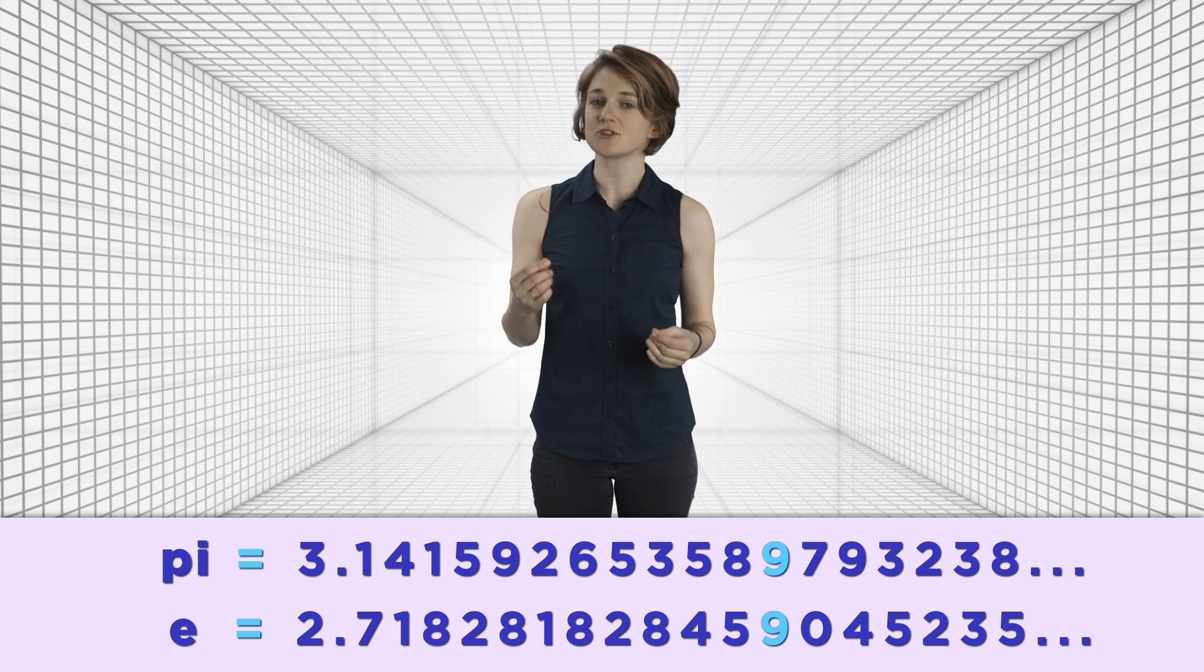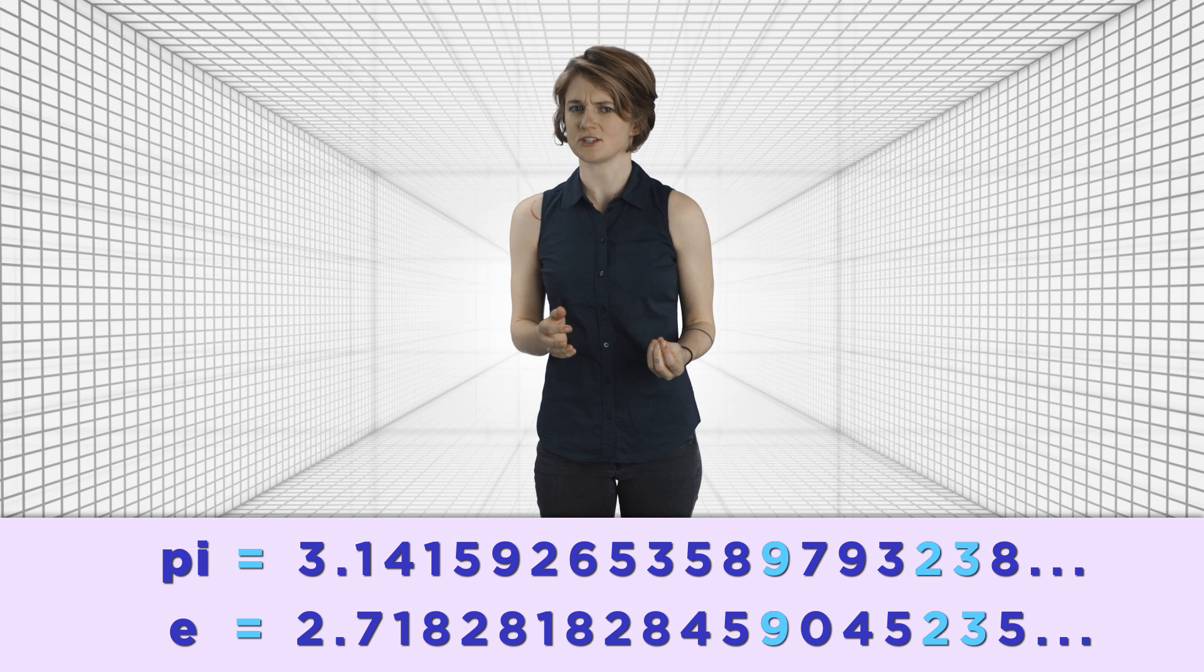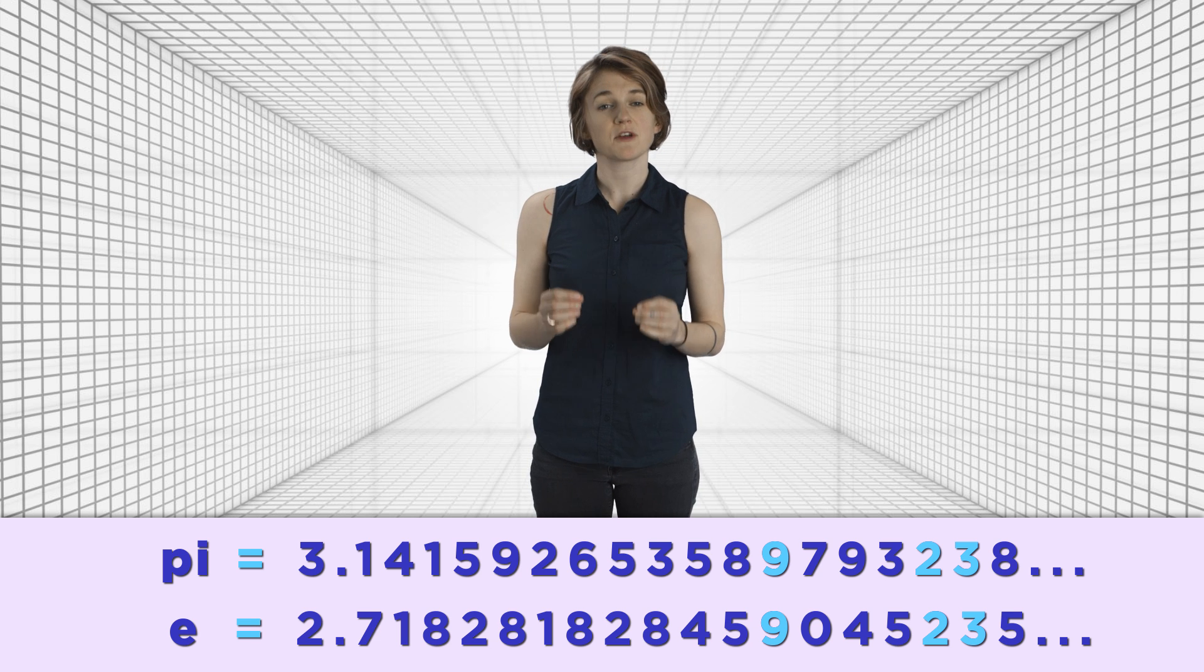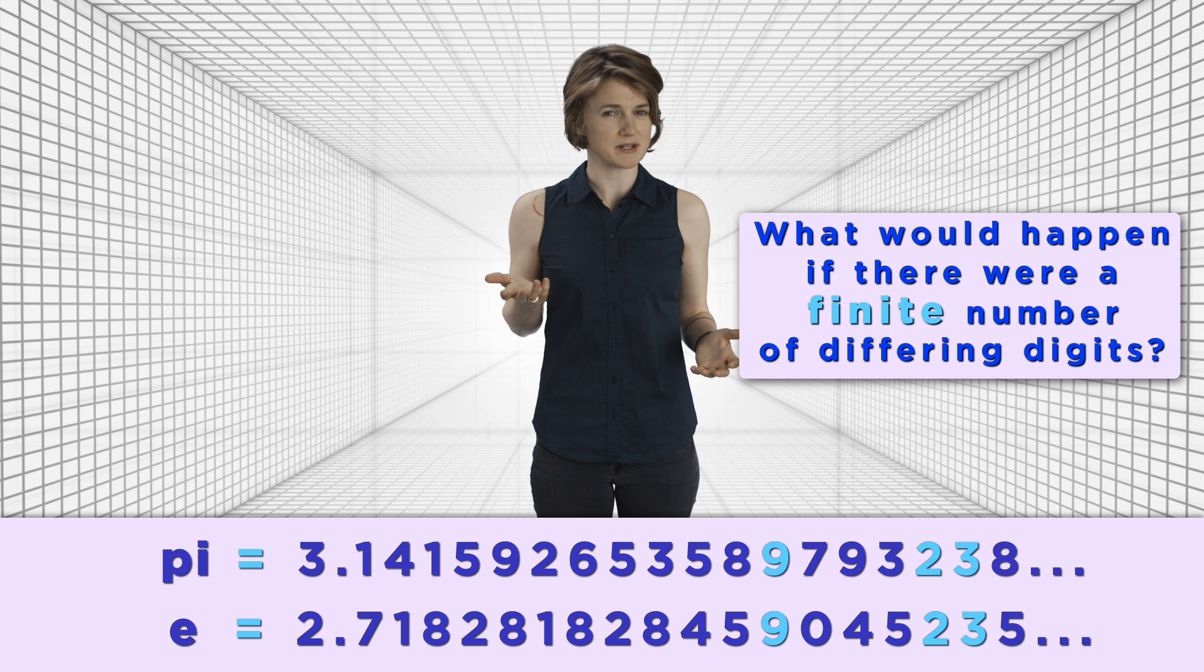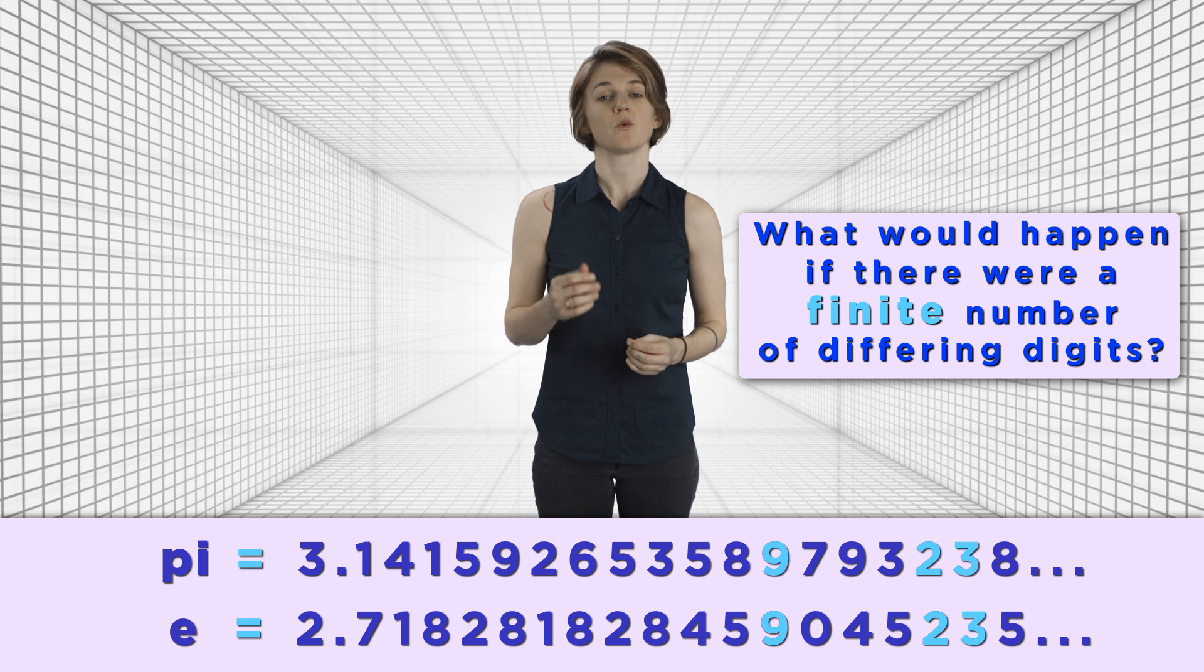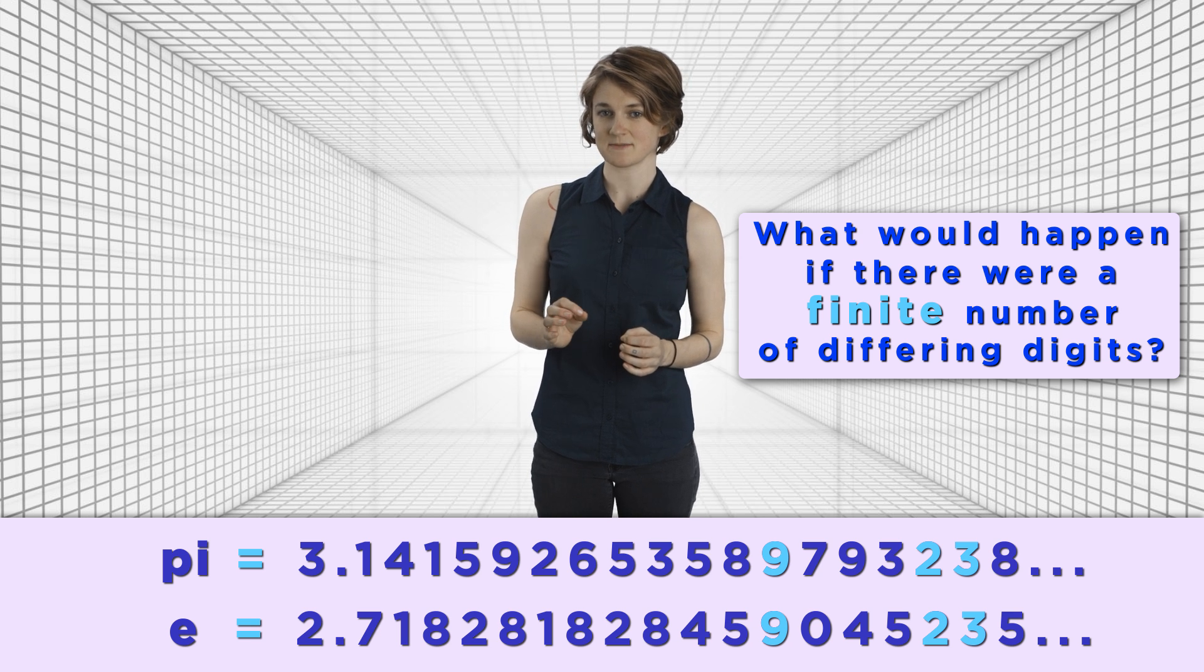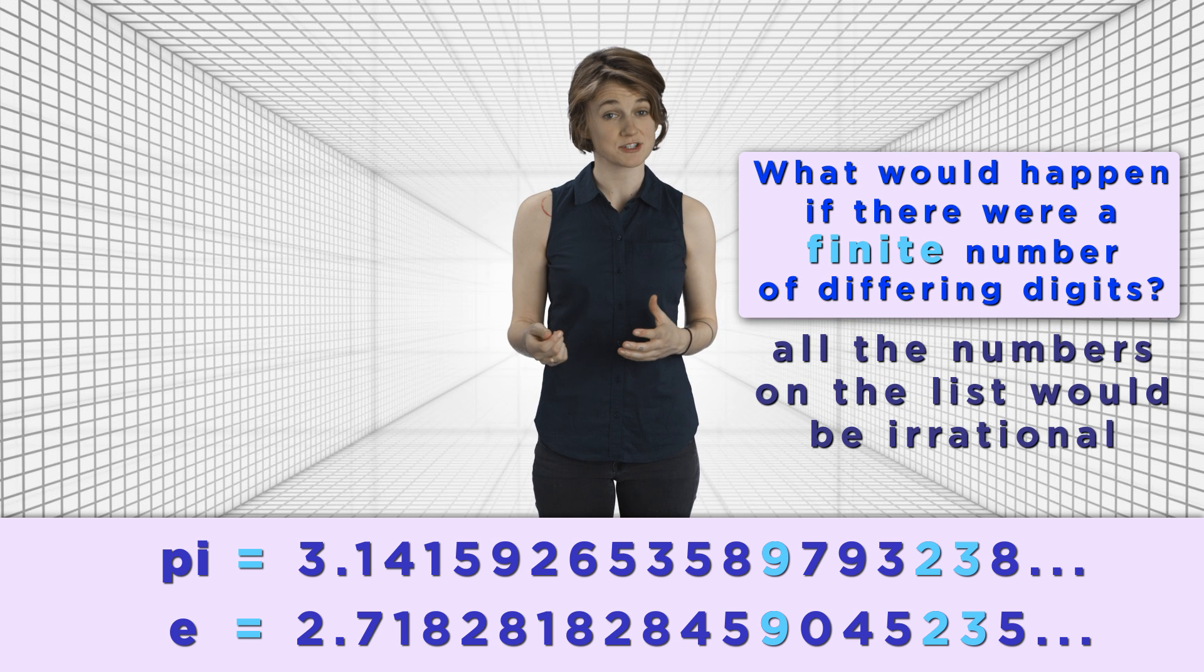If we exchange the 12th digit, it doesn't do anything. Same thing for the 16th and 17th digits. What if the digits of pi and e were mostly the same? If there were only finitely many places they differed, what would happen? Well, then there would only be finitely many new numbers produced by the digit swaps. And these new numbers would only differ from pi or e at finitely many places. This means that all the numbers on the list would be irrational.